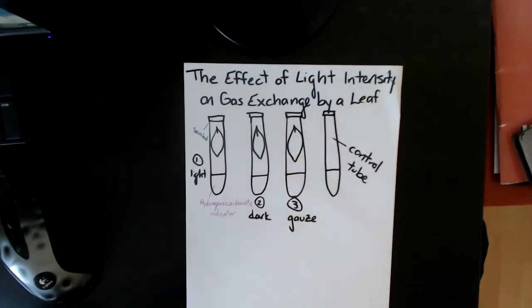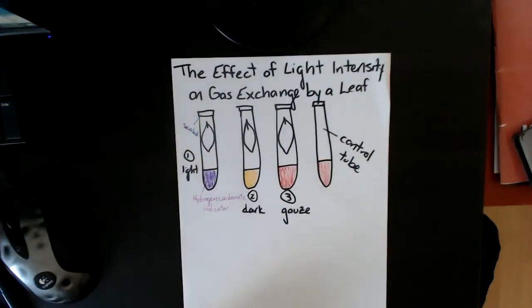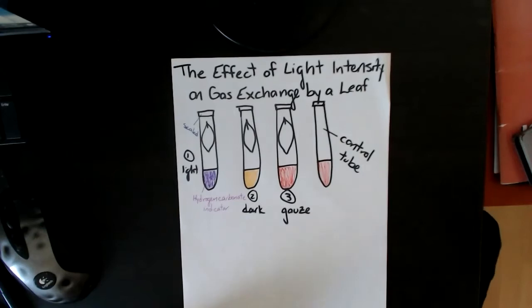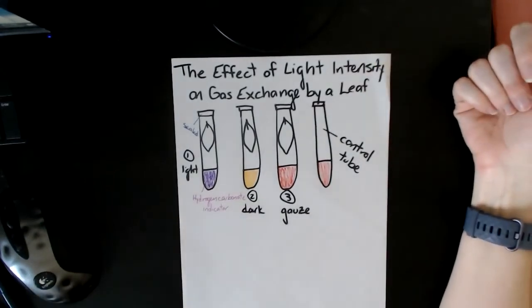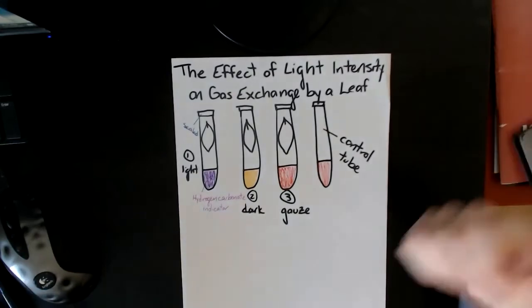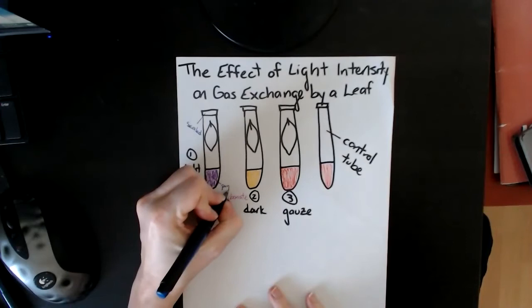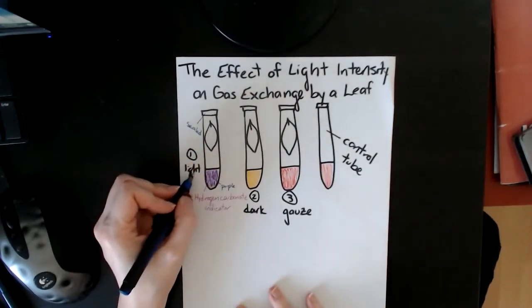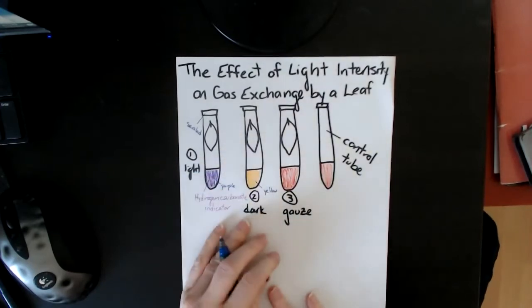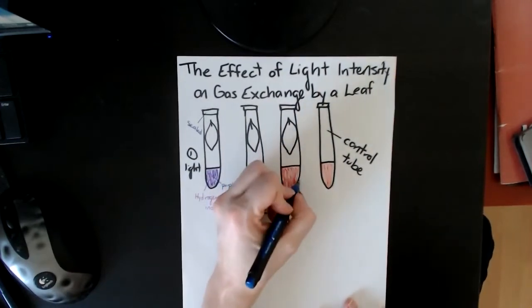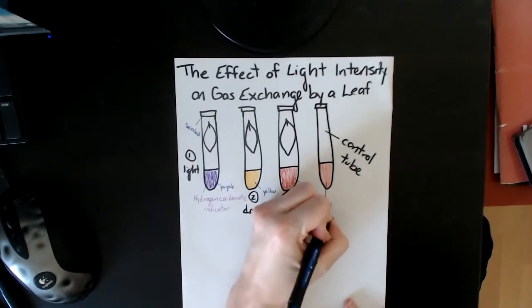Then you leave it for 24 hours, and then you come back and you look at the hydrogen carbonate indicator. So you come back after a few hours, 12 to 24, and these are the colors that you should see. My awesome drawing, this may not be very clear, so I will highlight the color that they're supposed to be. So this is purple. The one in the light is going to be purple. The one in the dark is going to be yellow. And the control and the one with the gauze, if you've done it right, should be either red or orange, which is the original color of the hydrogen carbonate indicator.